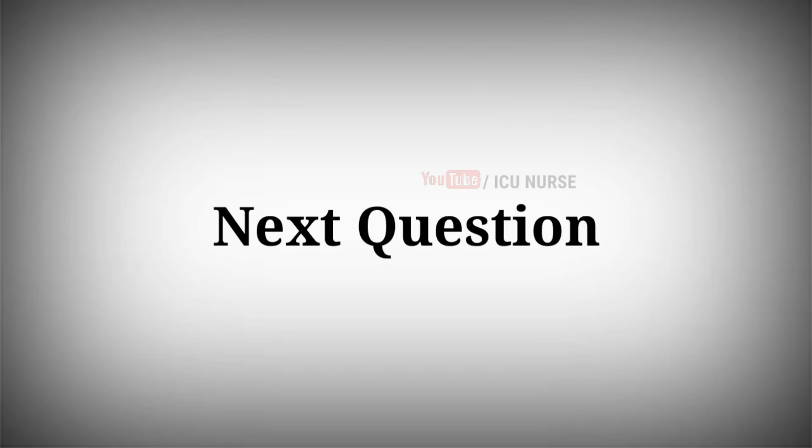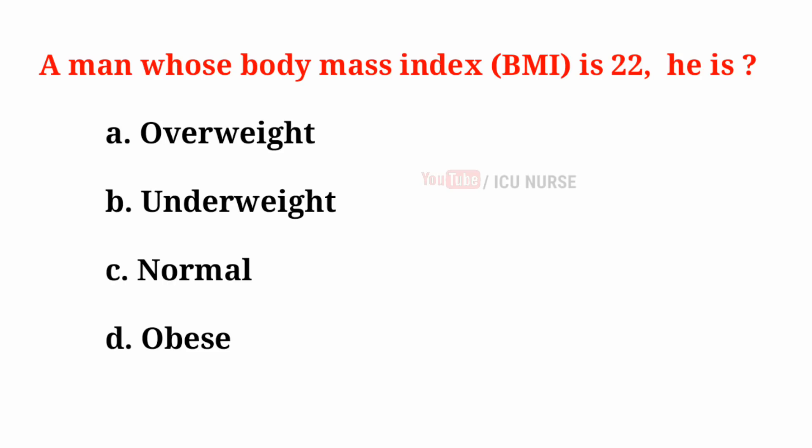A man whose body mass index is 22 is: A. Overweight, B. Underweight, C. Normal, D. Obese. And the correct answer is C. Normal.